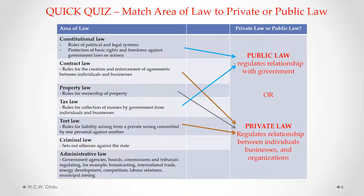Criminal law — laws that set out particular behaviors as offenses against the state, such as murder, theft, and fraud — is considered to be public law. Every time you commit a criminal offense, it's considered to be an offense against the state. Even though there might be a victim for that crime, strictly speaking from a legal standpoint, the offense is against the state. That's why it's considered to be public law.